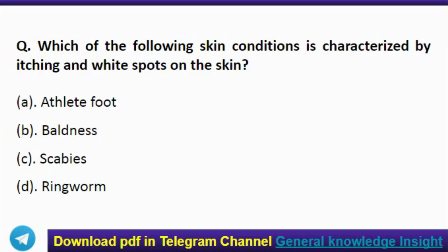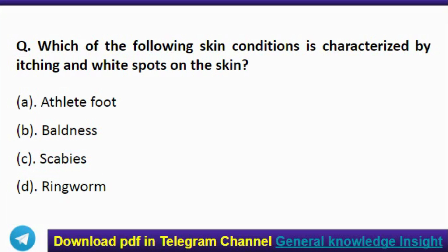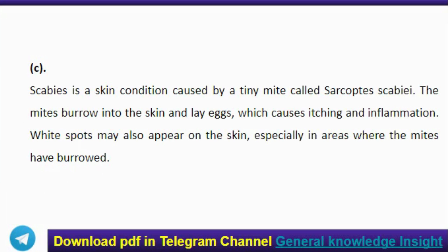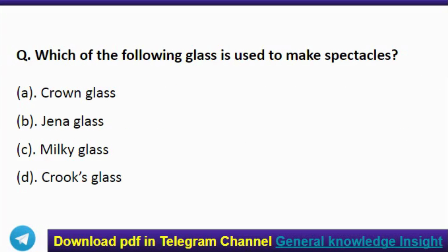The next question: which of the following skin conditions is characterized by itching and white spots on the skin? The correct answer is option C, scabies. Scabies is a skin condition caused by a tiny mite called Sarcoptes scabiei. The mites burrow into the skin and lay eggs, causing itching and inflammation. White spots may also appear on the skin, especially in areas where the mites have burrowed.